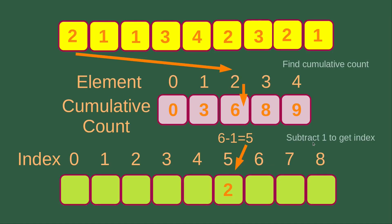After I have got the cumulative count of the elements, I can do the sorting. I simply start with the first element of the unsorted list, which is 2. So when I have number 2, I find the cumulative count for element number 2, which is 6. Then when I do the placement of the element to the final answer, I subtract 1 from the cumulative count to get the index. So I will get 5 because 6 minus 1 equals 5. It means that I want to put element number 2 to the index 5 position of the final answer.